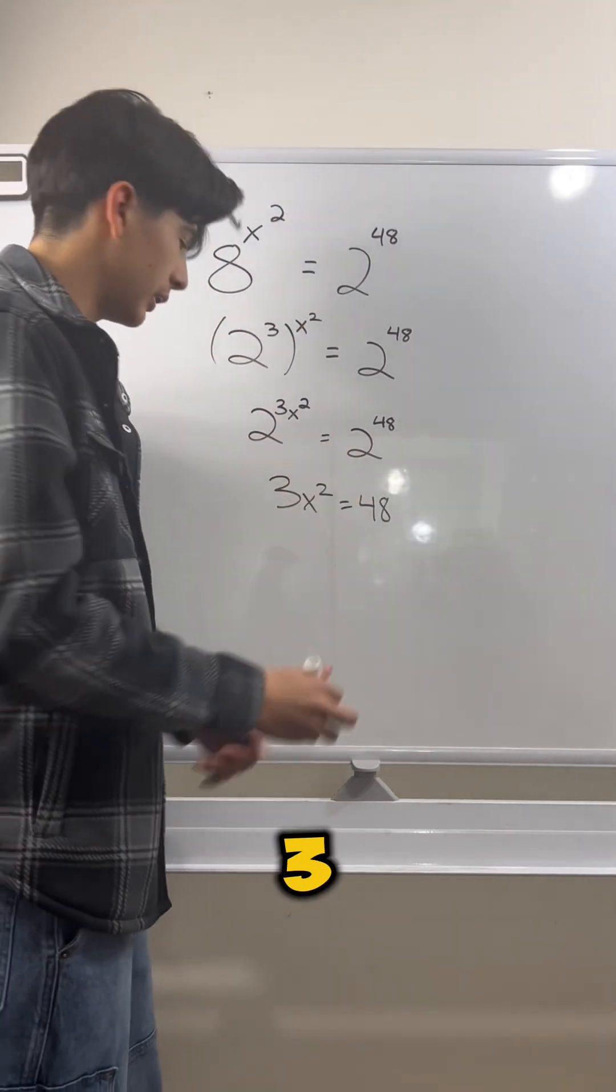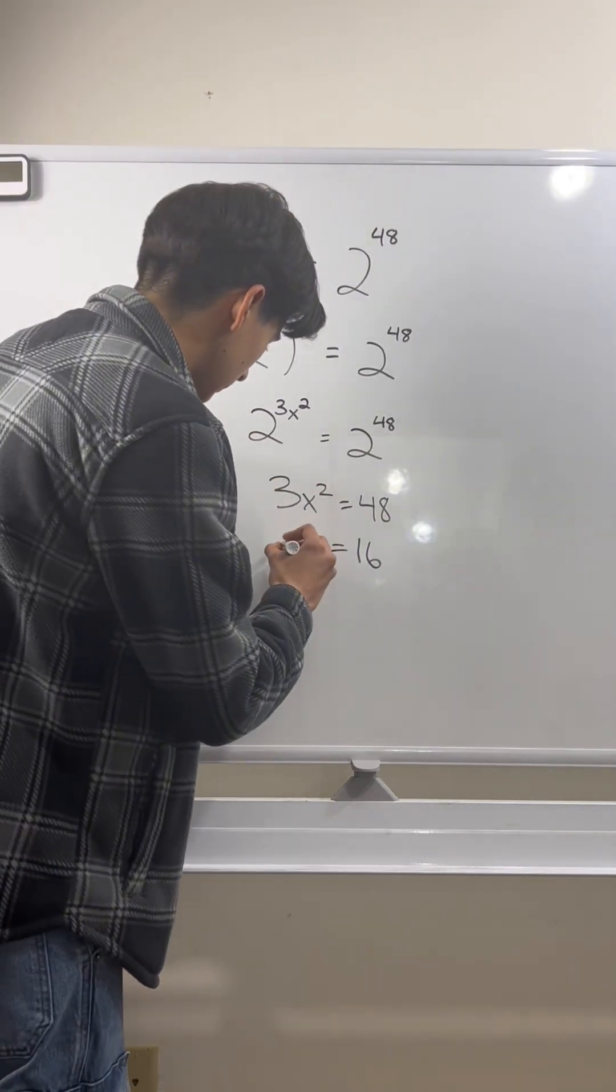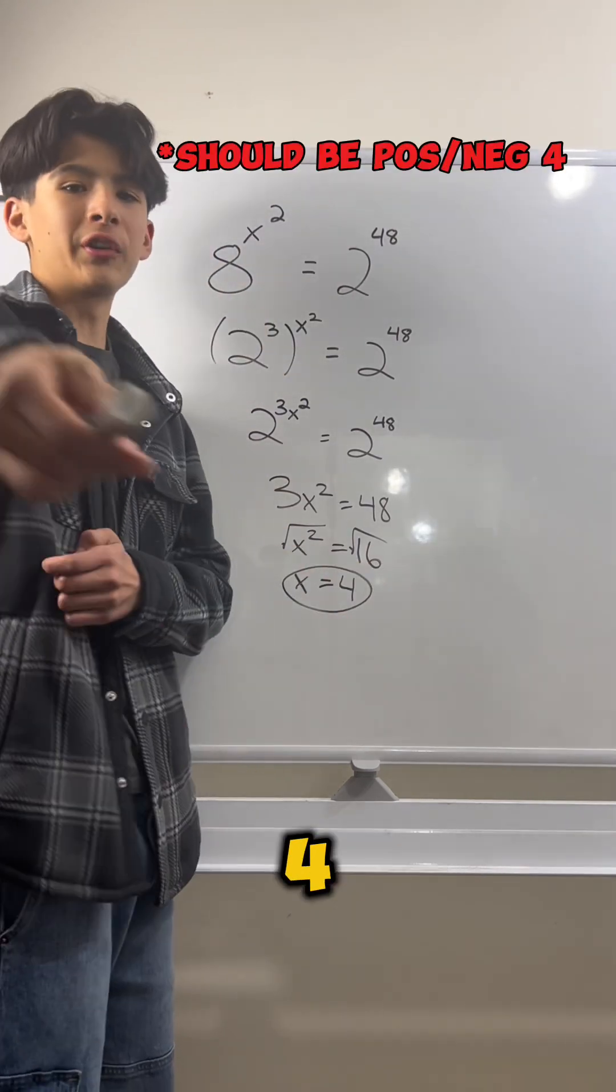We just divide each side by 3 and then square root both sides. And then we get x equals 4. God bless.